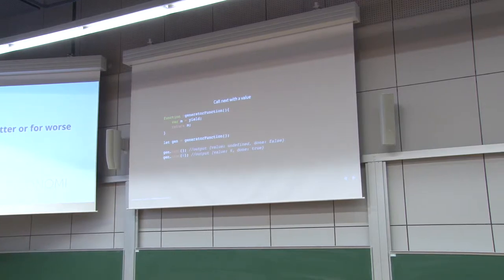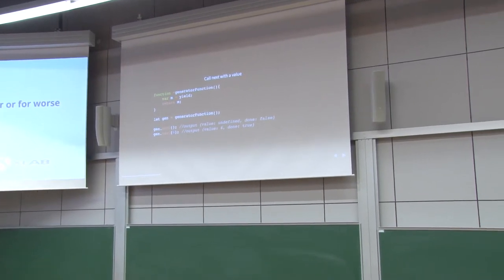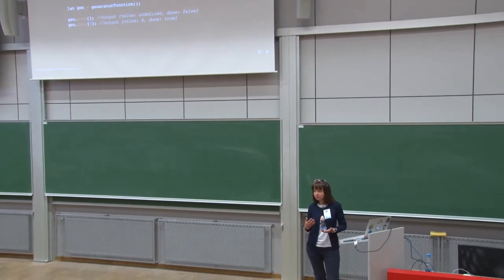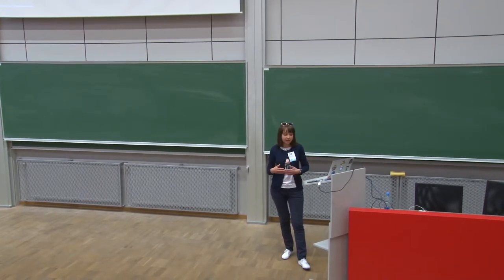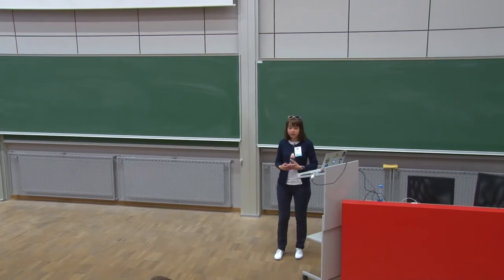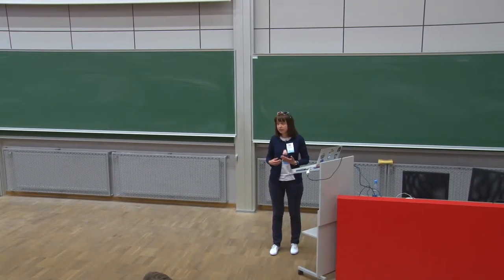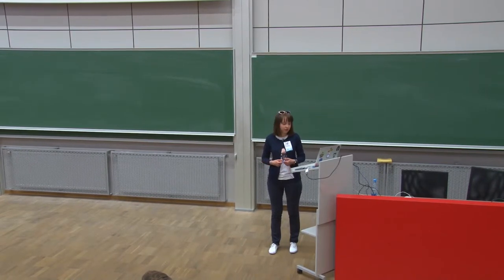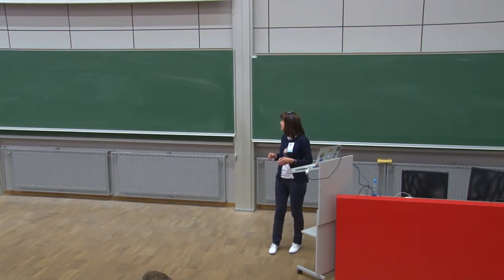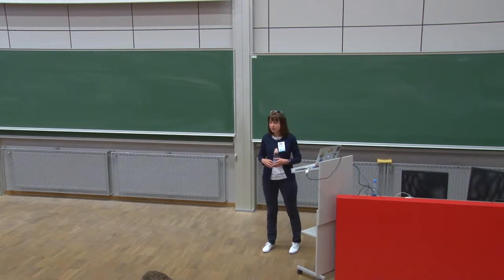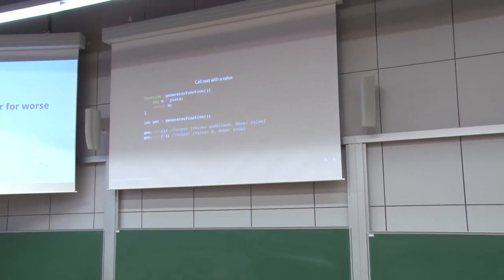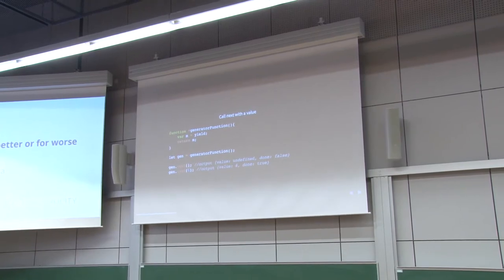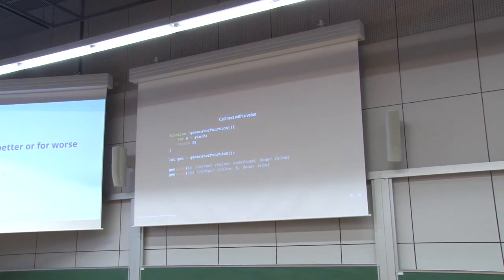You can also call next with a value. What happens is it resumes execution of your generator function and consumes this value. For instance, here you have an equation: M equals yield. When you run next for the first time, it pauses on the right side of the equation, so M is going to be undefined. Whenever you call next for the second time with some value, it will assign M that value and resume execution.